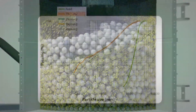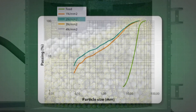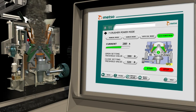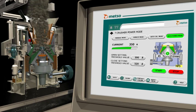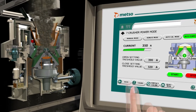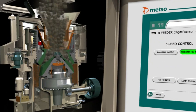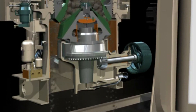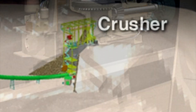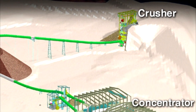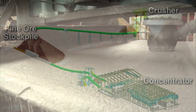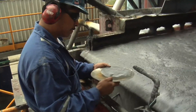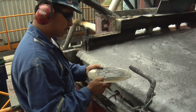Technology has been developed to monitor variations in the incoming ore properties and modify the crushing techniques to improve efficiency. Once the metal-bearing ore has been crushed and then ground, the precious metal-bearing material must be separated from the rest of the material. A standard and widely used process called flotation separates particles based on their tendency to attach to frothing bubbles.